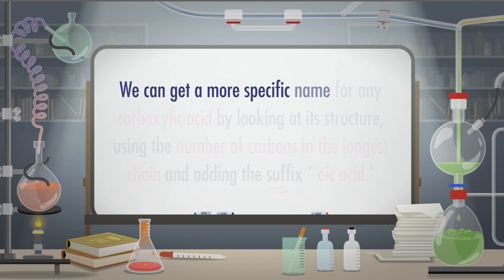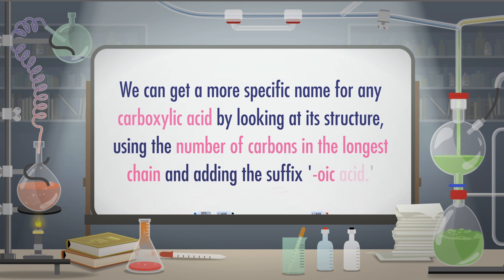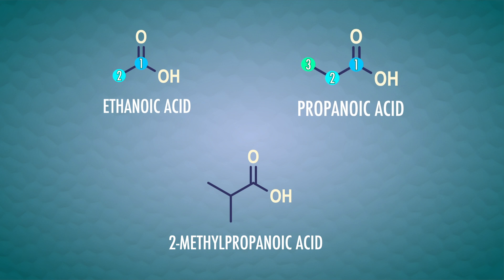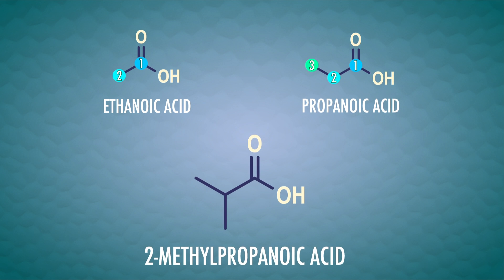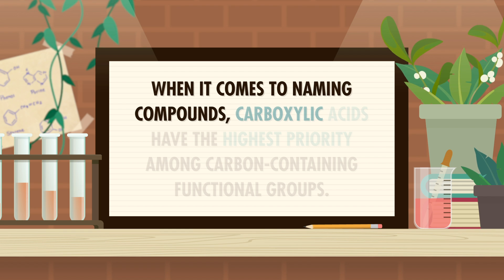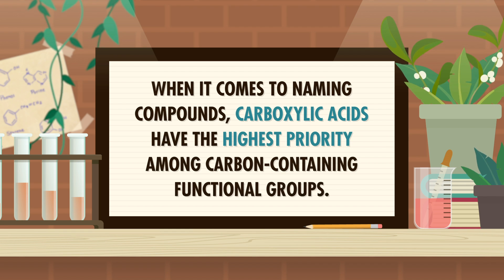We can get a more specific name for any carboxylic acid by looking at its structure, using the number of carbons in the longest chain and adding the suffix -oic acid. A carboxylic acid with two carbons is ethanoic acid, a carboxylic acid with three carbons is propanoic acid, and so on. So in the previous reaction we made 2-methylpropanoic acid.